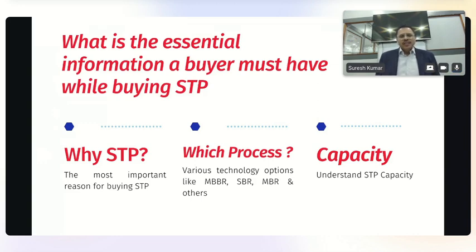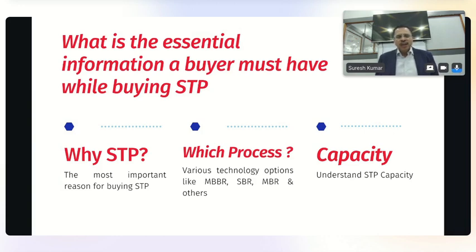The second most important thing an STP buyer should know is what kind of technology to employ — is it MBBR, SBR, MBR, extended aeration, electrocoagulation, Jokasu, or whatever it is? Which process is ideally suited for them?